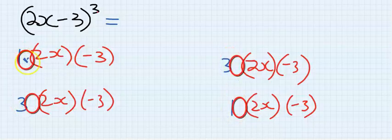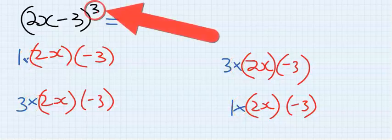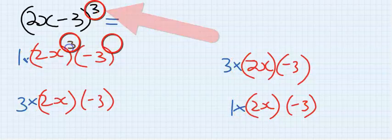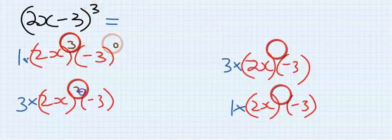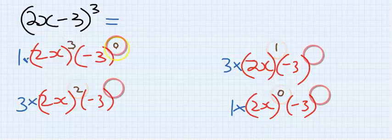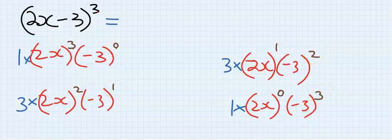The next step is assigning powers. Starting with 3, 0, then 2, 1, then 1, 2, then 0, 3. Let's simplify our results.